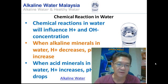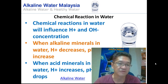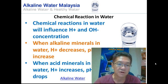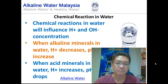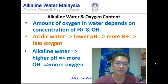Alkaline minerals include things like calcium, magnesium, potassium, and sodium, whereas acid minerals would be things like sulfur and a few other minerals.